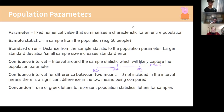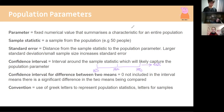A confidence interval for the difference between two means — such as female versus male athlete heights — cannot include zero. If it includes zero, it means there is no difference between the two groups. The convention for confidence interval is between zero and some value, and zero must be excluded to show a significant difference.